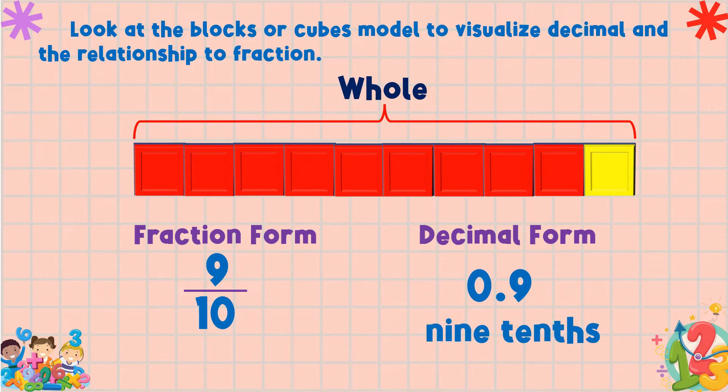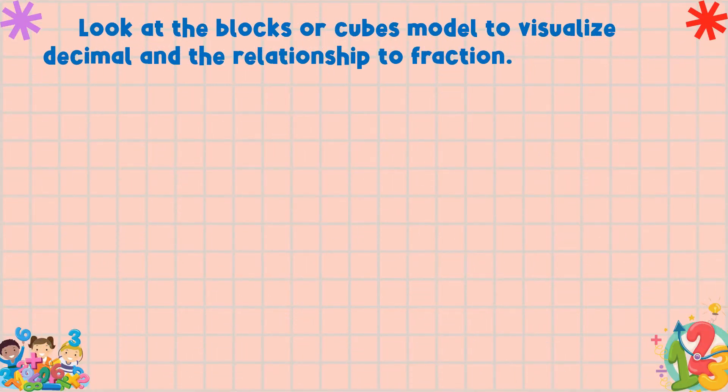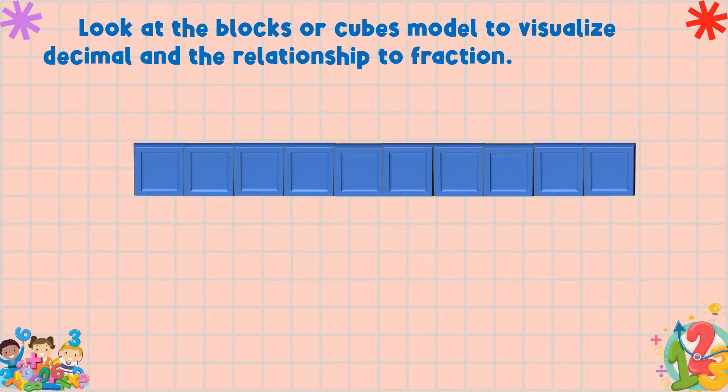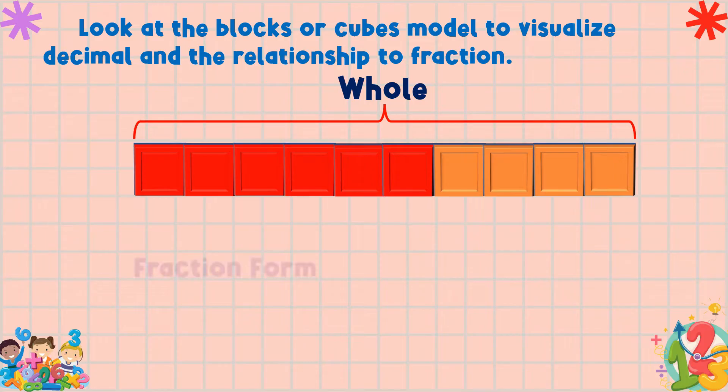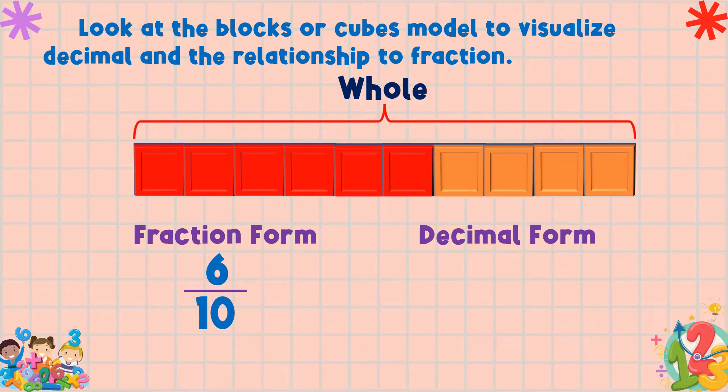We read this as nine-tenths. Another example: there are ten cubes representing the whole. Now let's color six cubes with red. What is the fractional part of the red cubes? It is six-tenths, or six out of ten. In decimal form, we write six-tenths like this: 0.6.